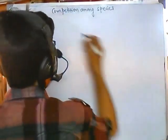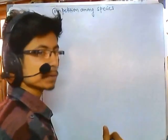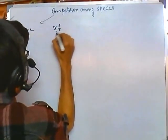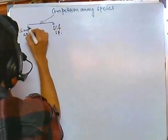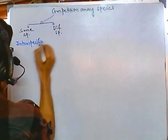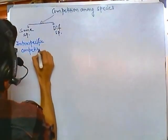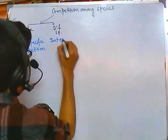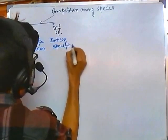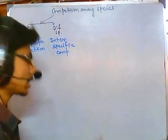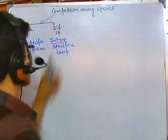We can divide this type of competition between species in different ways. One way is based on whether the competition is between the same type of species or between different types of species. If the competition is between the same species, it is termed intraspecific competition. If it is between different species or members of different species, it is called interspecific competition.